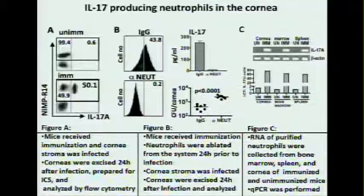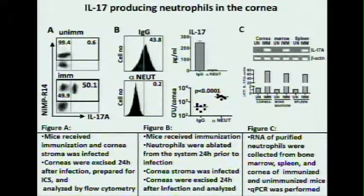To identify what cells were producing IL-17 in the corneas, we again immunized mice, infected the corneal stromas, and excised the corneas 24 hours after infection, which is when we first saw IL-17 produced. By flow cytometry, we stained cells for NIMP-R14, an antibody for an extracellular marker for neutrophils, and also intracellularly for IL-17. As you can see in the immunized mice, approximately 50% of the neutrophils infiltrating the cornea produce IL-17. This phenomenon is only seen in presensitized mice, which correlates to normal immunocompetent humans.